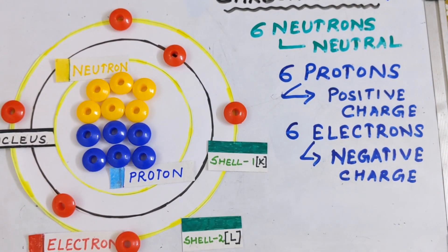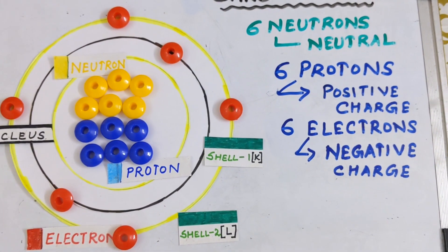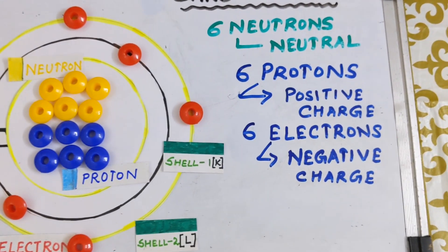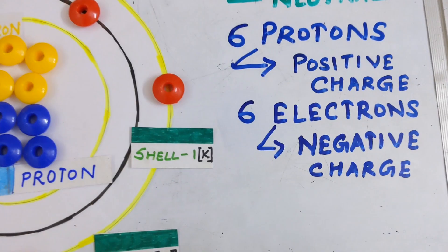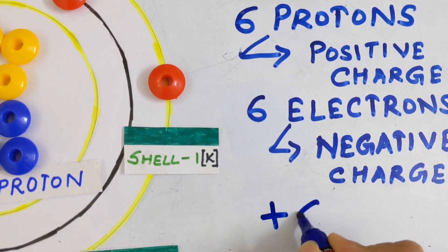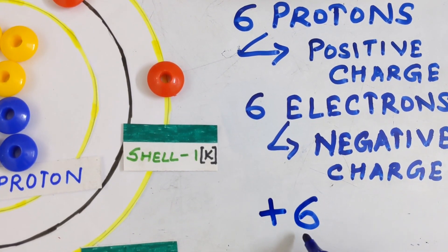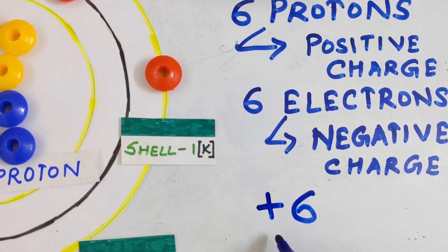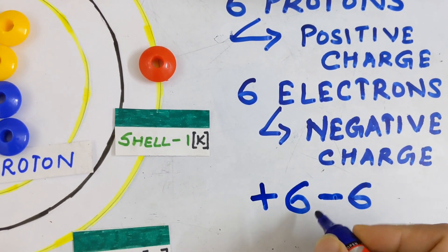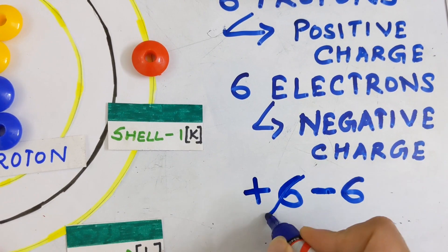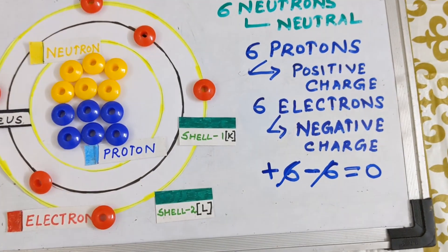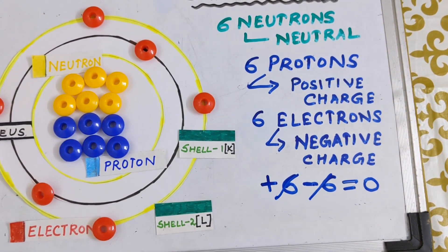Now, neutrons carry no charge — they are neutral. Protons carry a positive charge and electrons carry a negative charge. So the neutral nature is decided on the basis of protons and electrons. Since protons carry positive charge, we write plus six because there are six protons. Electrons carry negative charge and there are six electrons, so minus six. Therefore, plus six minus six gets cancelled and the answer is zero. This is how we come to know that an atom is electrically neutral.